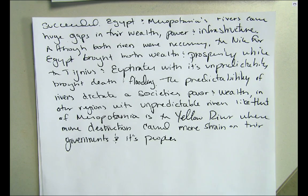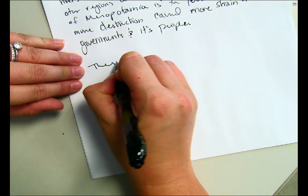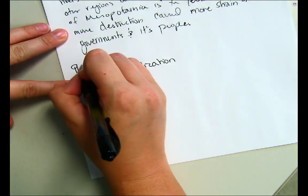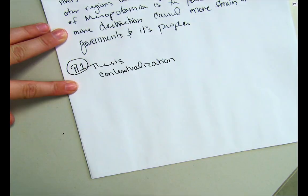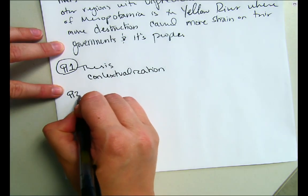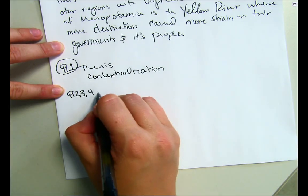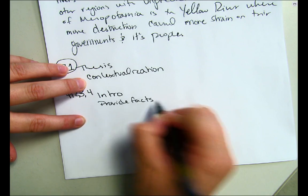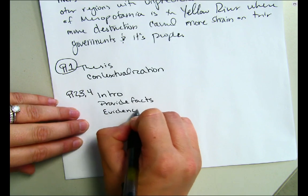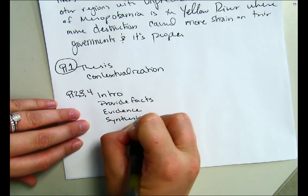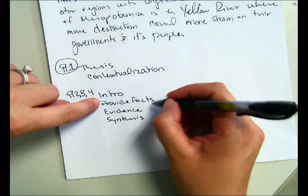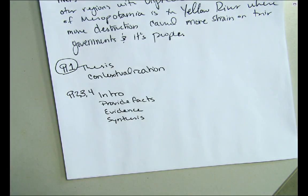You don't need a conclusion. Here's how a total essay goes: Paragraph 1 = thesis then contextualization. Paragraphs 2, 3, and 4 = intro/topic sentence, facts, evidence, synthesis. You do that three times. That's how you write a compare-contrast essay.